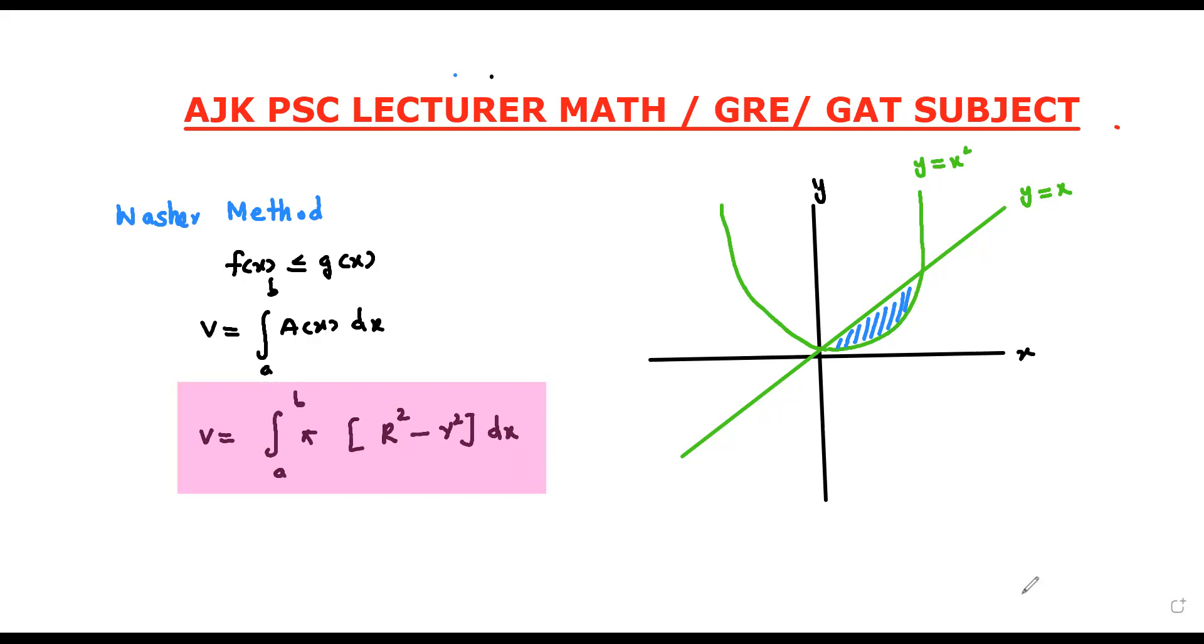We will use the information we are given that y equals x and y equals x square. First of all, we find the limits, what will be the limits of integration. In this case, the intersection point of curves: y equals x square and y equals x. So x square equals x. X square minus x equals 0. X into x minus 1 equals 0. So we have intersection x equals 0 and x equals 1.